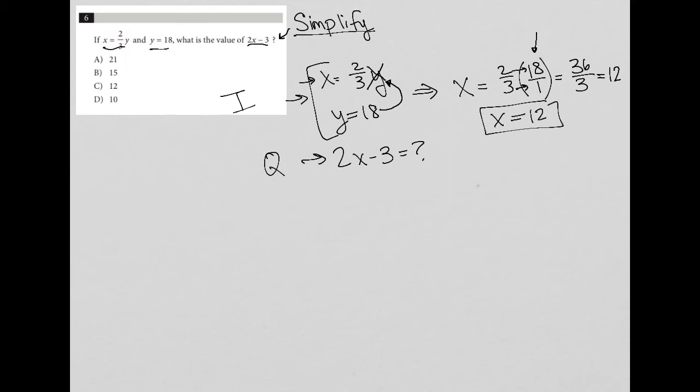But the question is not asking me to find x. So be aware of that because look at choice C, the answer 12 is right there to trap you. We're not asked to find x, which is why I think it's a valuable habit to write down the actual question. The question actually wants us to find what is 2x minus three.